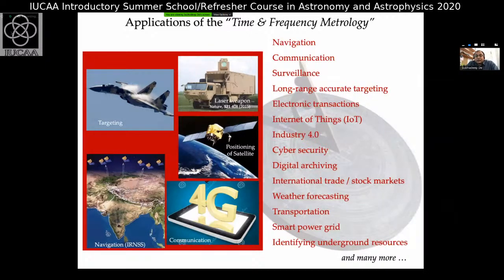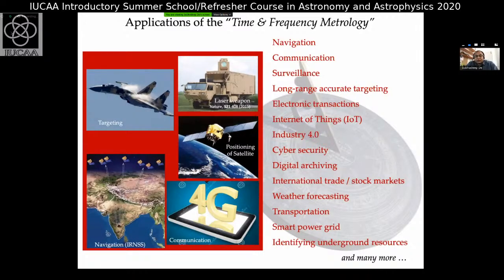Weather forecasting — like predicting where a cyclone will hit — can only be done accurately not just by good meteorological models but also by very accurate time synchronization, to predict the landfall within a few kilometers accuracy. We've seen this recently with two cyclones hitting India, predicted very accurately through satellite technologies, good models, and good clocks which are the backbone of all these things.